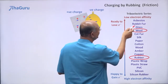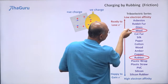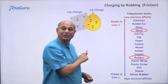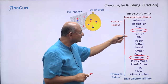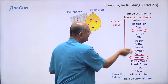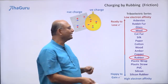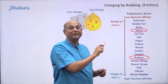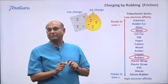For example, if I take glass and silk — glass is above silk in the series, so glass will become positively charged and silk will become negatively charged. For any two items in the series that are reasonably far apart, whatever is above will become positive and whatever is below will become negative.